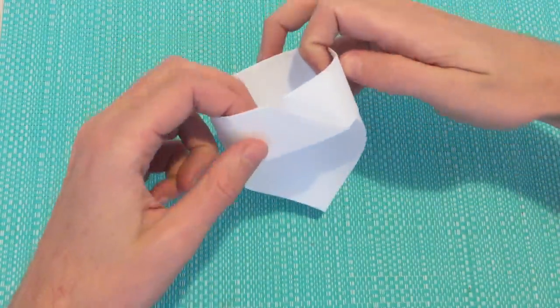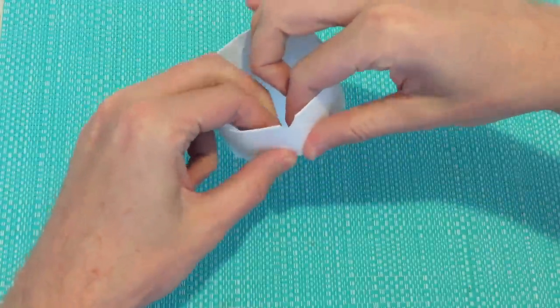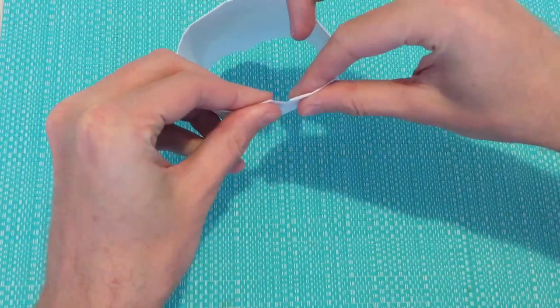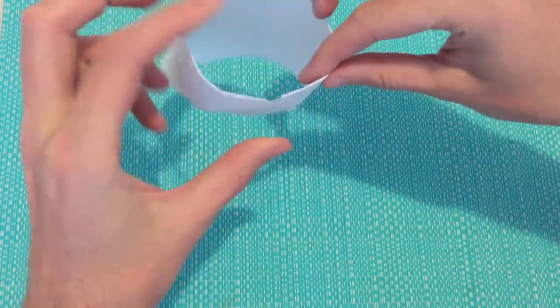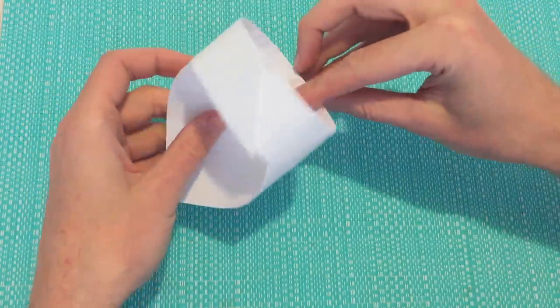Let's go back to where it's joining up and give it a few more pinches to help it stay together. That's all there is to making the glider.